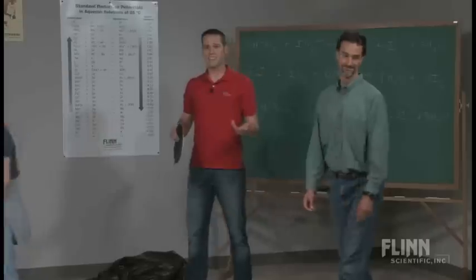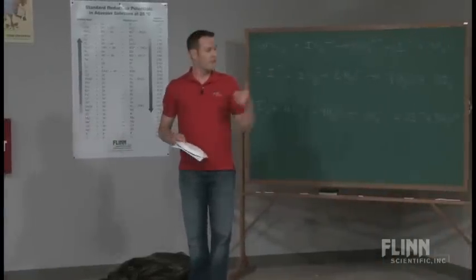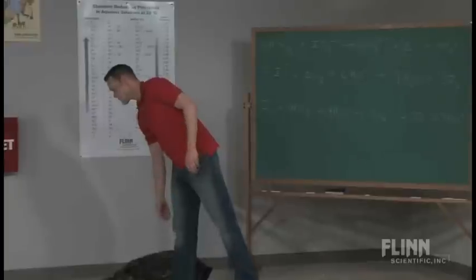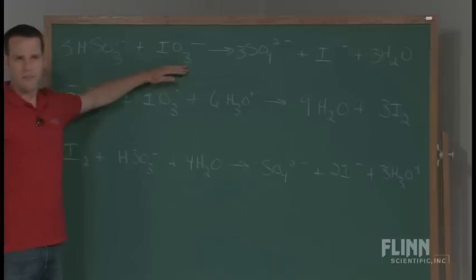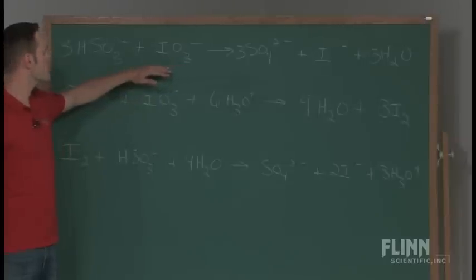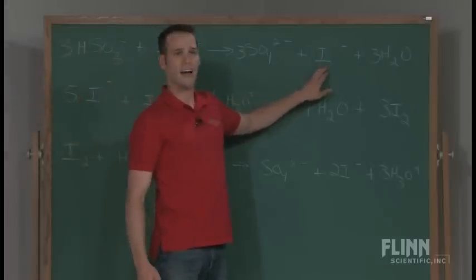If we want to apply this to the iodine starch reaction, I have the equation up here. The way that the iodine starch reaction starts, you have iodate, potassium iodate is what we use to put that into solution, and hydrogen sulfite ion as well. The two of these react together to produce the iodide ion.